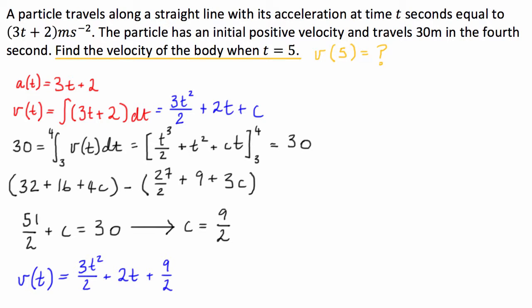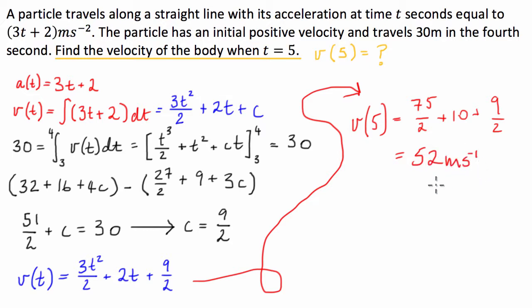So now finally, all we have to do is find v of 5. So we're going to go, well, v of 5 is going to be 5 squared is 25, times 3 is 75, or 75 on 2, plus 2 times 5 is 10, plus our constant. 75 plus 9 is 84, divided by 2 is 42, plus 10 is equal to 52 meters per second.